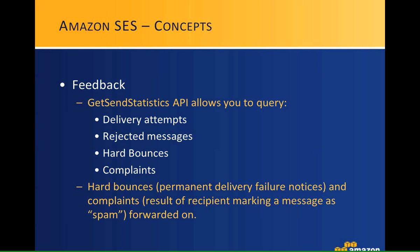Complaints occur when an email recipient marks a message as spam in their web client, triggering a notification from participating ISPs back to the sender. We take the hard bounce messages and complaint messages from ISPs and forward those to you. You can either specify a return path parameter when invoking SES and we'll forward notifications to that address, or we'll forward it back to the From address used for that message.